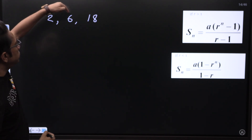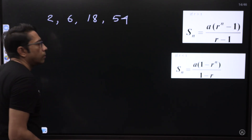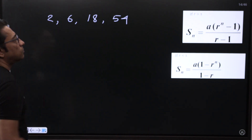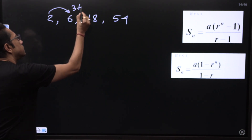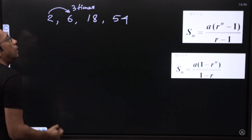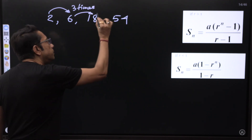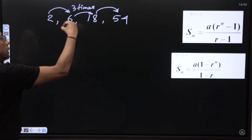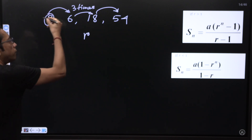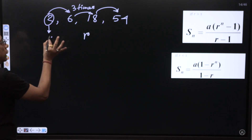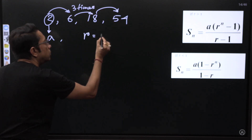You can see that the next term is 3 times the preceding term. Then 18 is again 3 times 6, and the next term would be 54. The ratio by which each term multiplies is called R — the common ratio. The first term of such a series is denoted by A. So here A equals 2 and R equals 3.